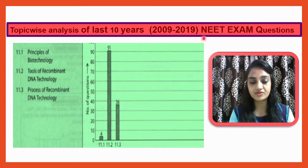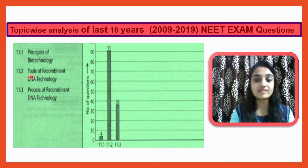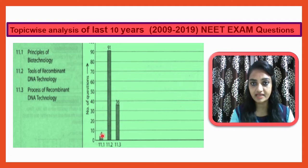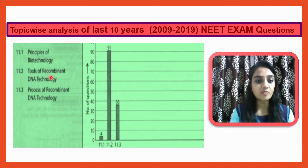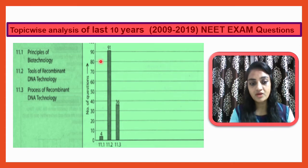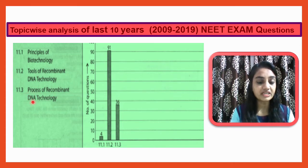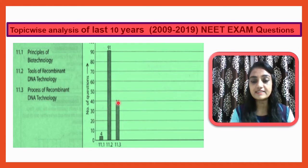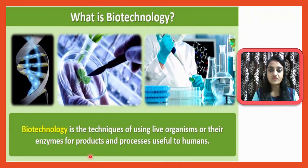In this chapter we will discuss three topics. From 'Principles of Biotechnology,' 4 MCQs were asked in the last 10 years. From 'Tools of Recombinant DNA Technology,' 91 MCQs were asked, and from 'Process of Recombinant DNA Technology,' 36 MCQs were asked. So you can understand which topic is most important.